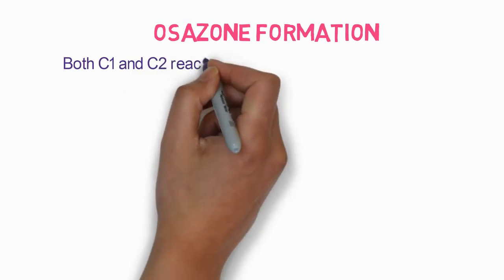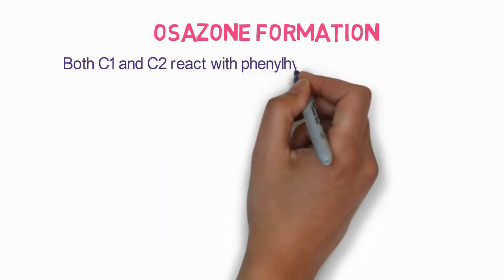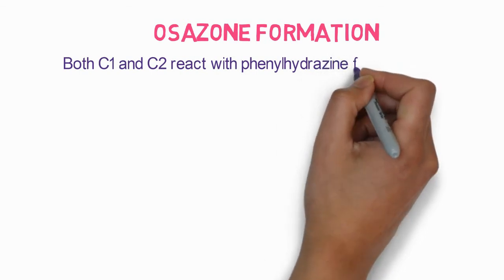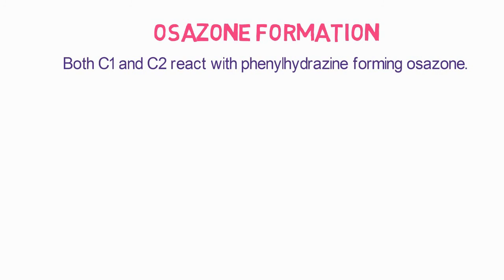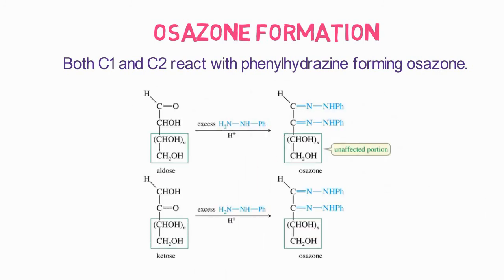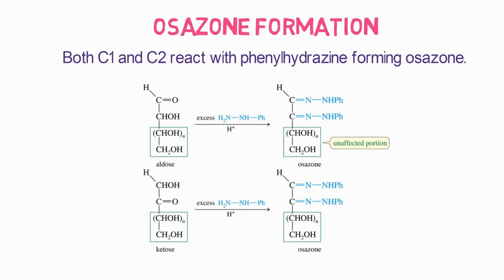The next reaction is osazone formation. In the case of sugars, both C1 and C2 react with phenylhydrazine, forming osazones. You can see in this reaction that both aldoses and ketoses are converted to osazones, and only the first two carbons — C1 and C2 — react with the phenylhydrazine.